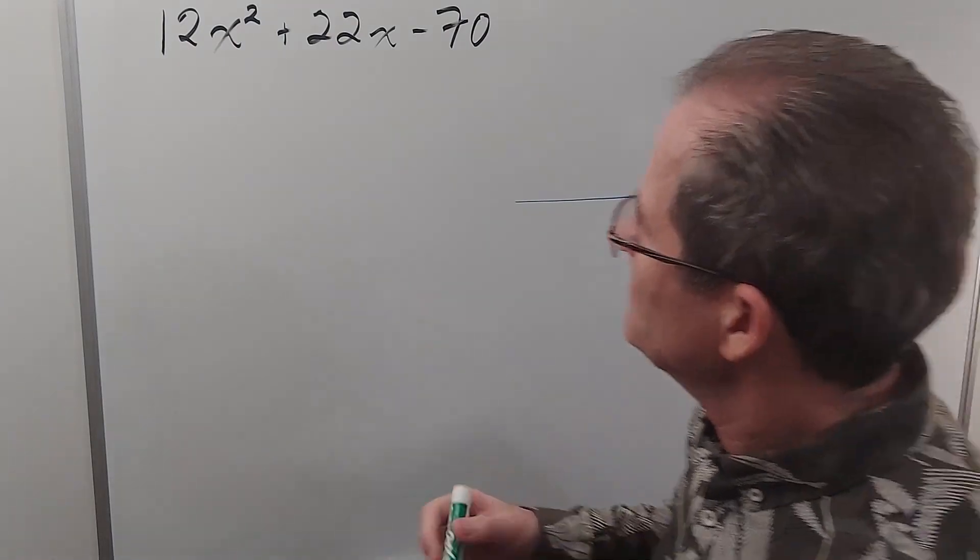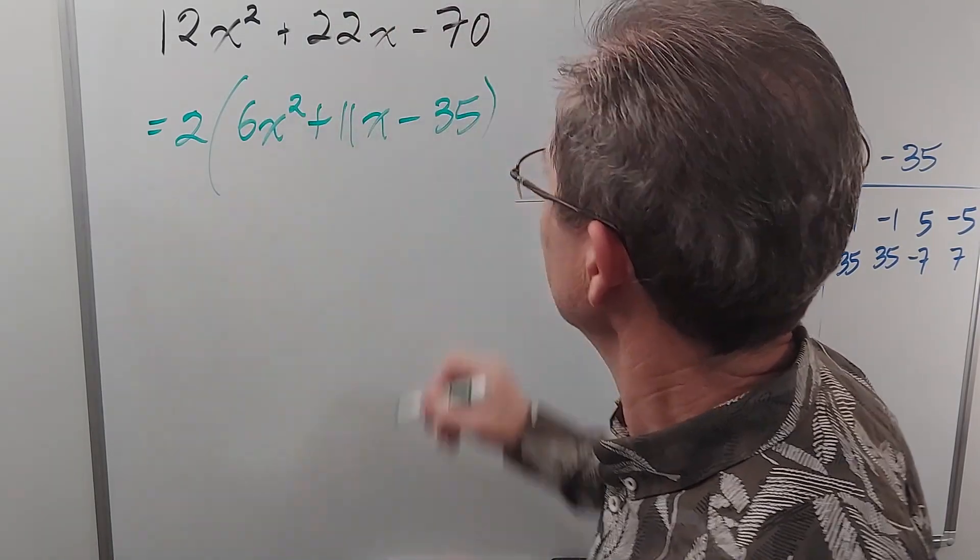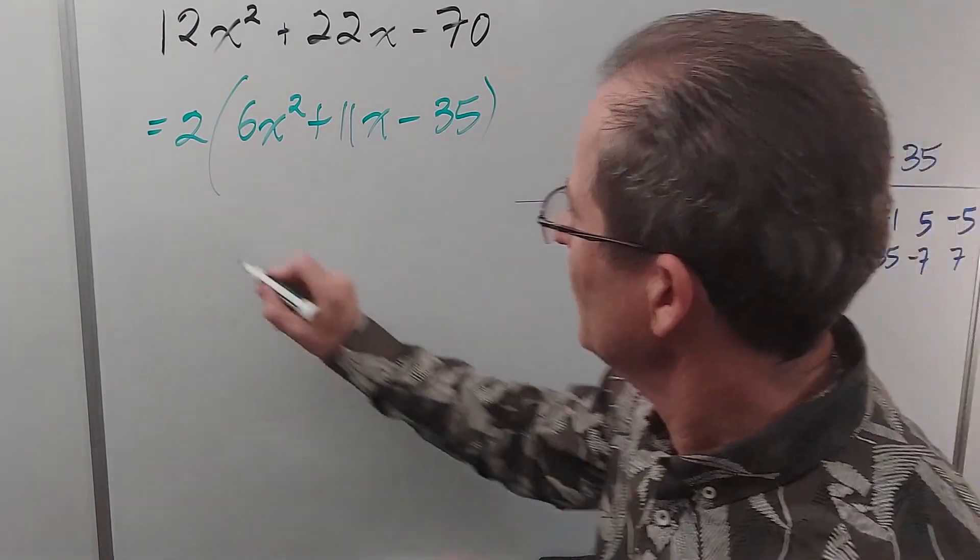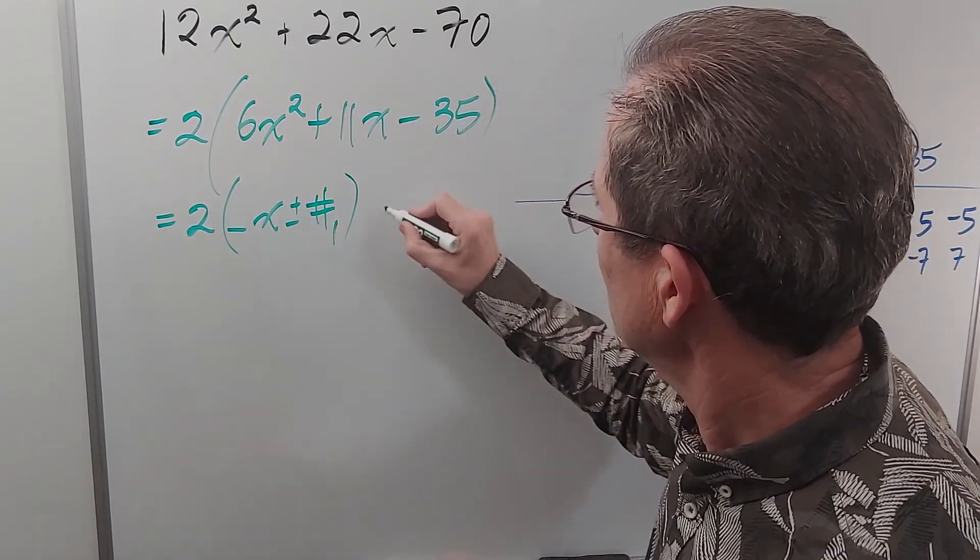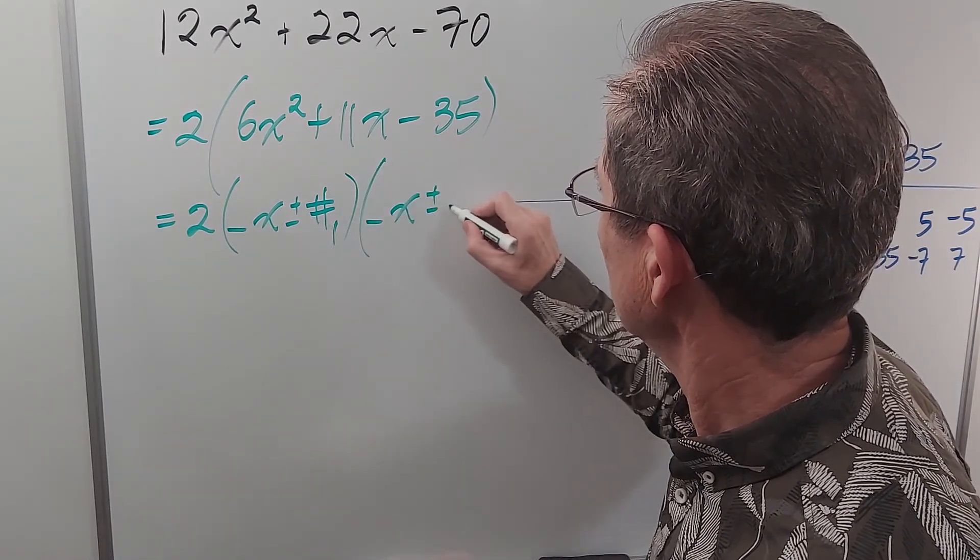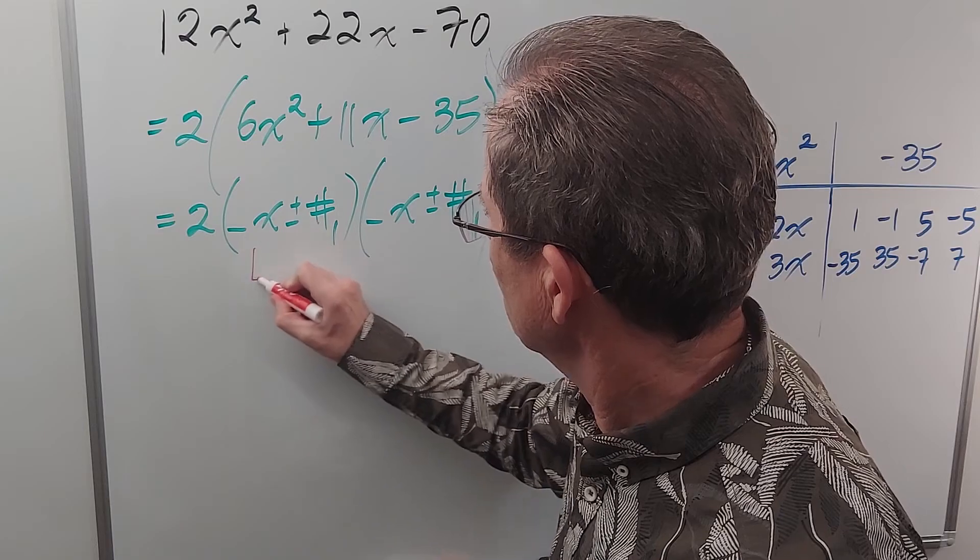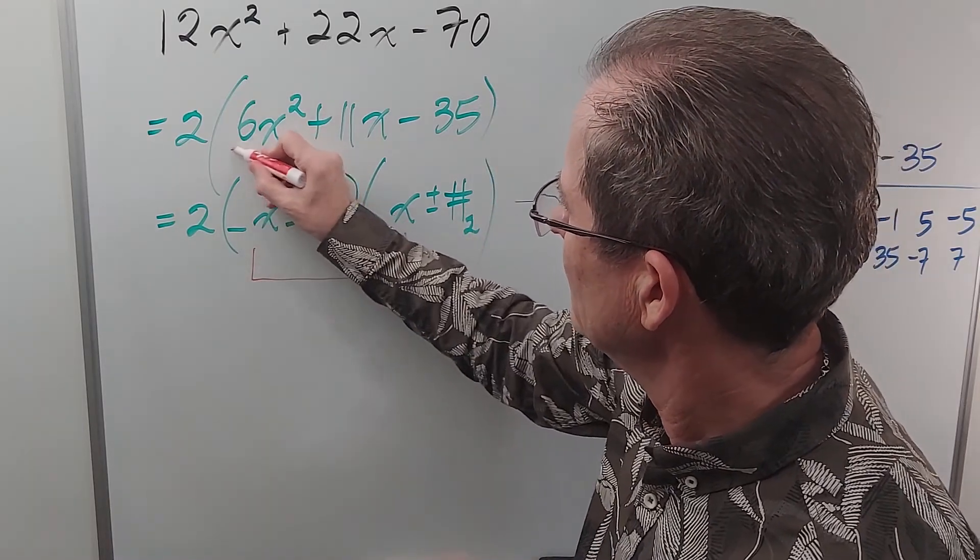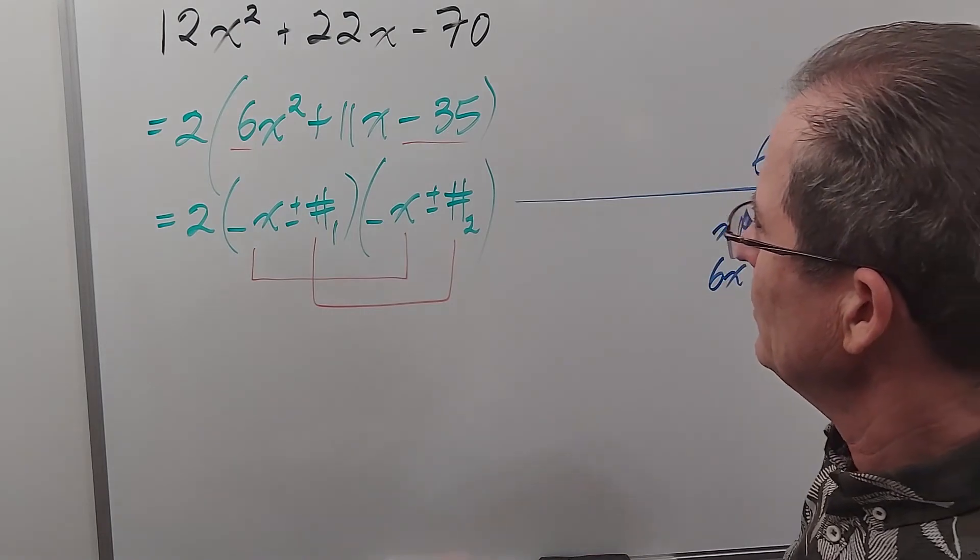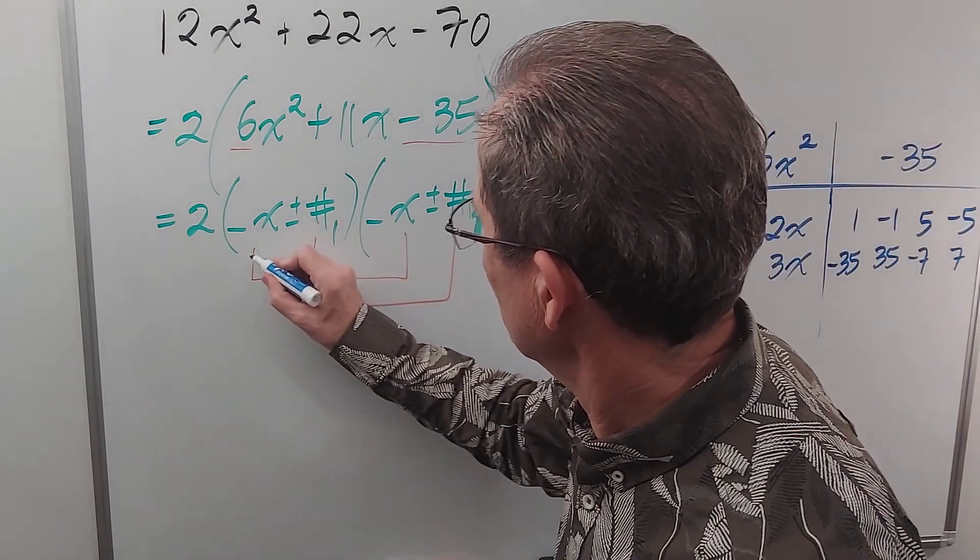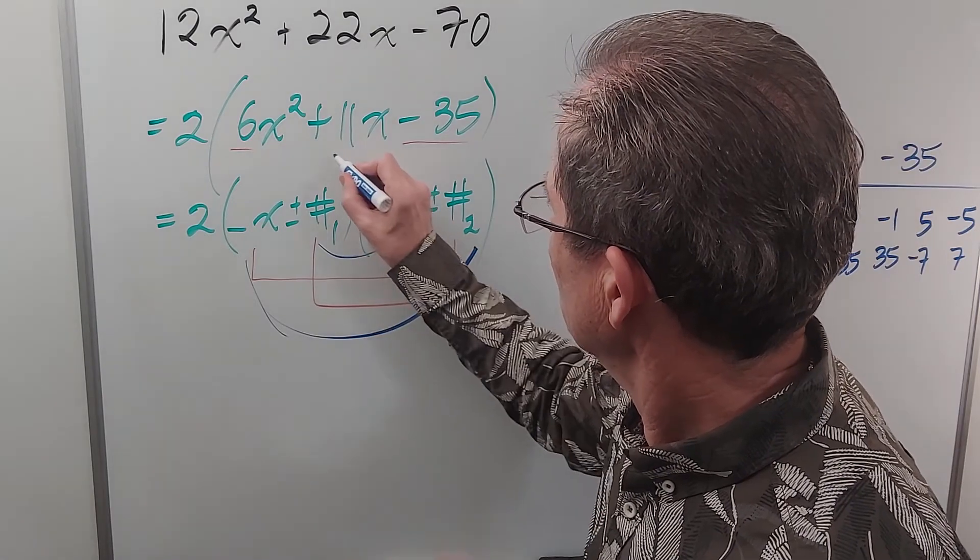If I do that, this becomes 2 times (6x² + 11x - 35). So if I continue I'm going to get 2 times so many x's plus or minus some number times so many x's plus or minus some number. Now we know that these two must multiply to 6x² and these two must multiply to negative 35. And furthermore we know that the x's will be obtained by doing the outside and the inside. And they have to add up to 11x.